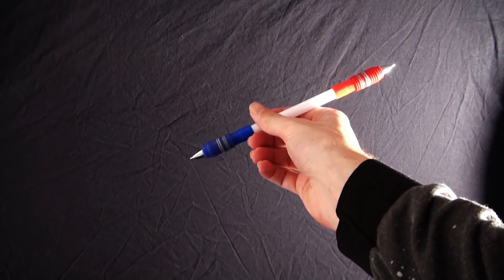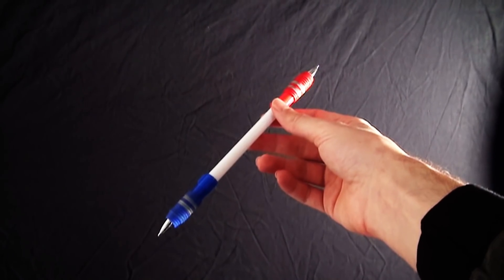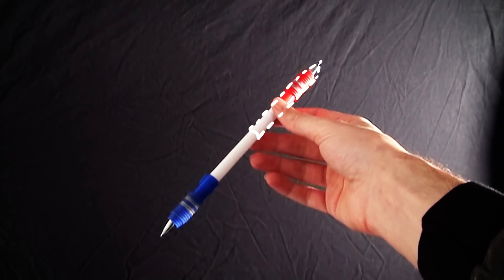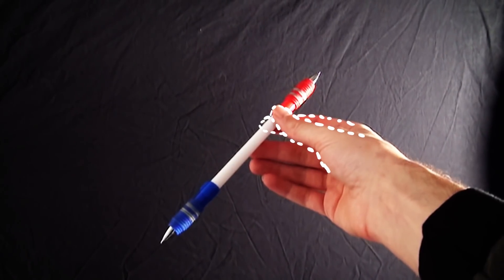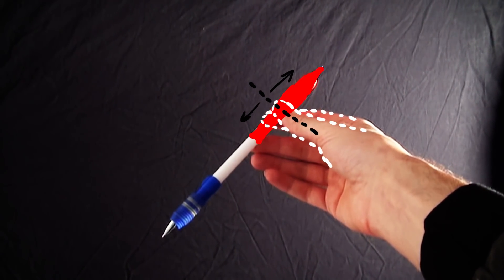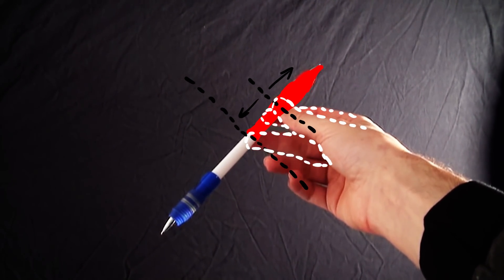A much easier trick is this one here, and that is super easy. All you have to do is hold the pen on one side like this. See how I roughly have my thumb and index finger in the middle of the upper half, and I place the middle finger in the middle of the pen.